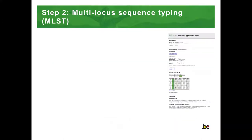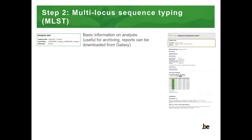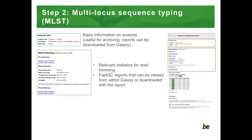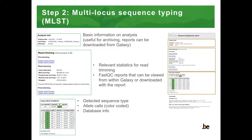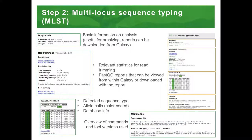The output of the tool is provided as an interactive HTML report, which can be viewed from within Galaxy. The report contains various sections, starting with the analysis info at the top. The second section contains FastQC reports and statistics for the read trimming, which can be enabled or disabled in the tool interface. The third section contains the output of the typing itself — in this case, the sequence type and the corresponding allele calls. At the bottom of the report there is a section containing the commands that were used to obtain the results, in this case for Trimmomatic and KMA.